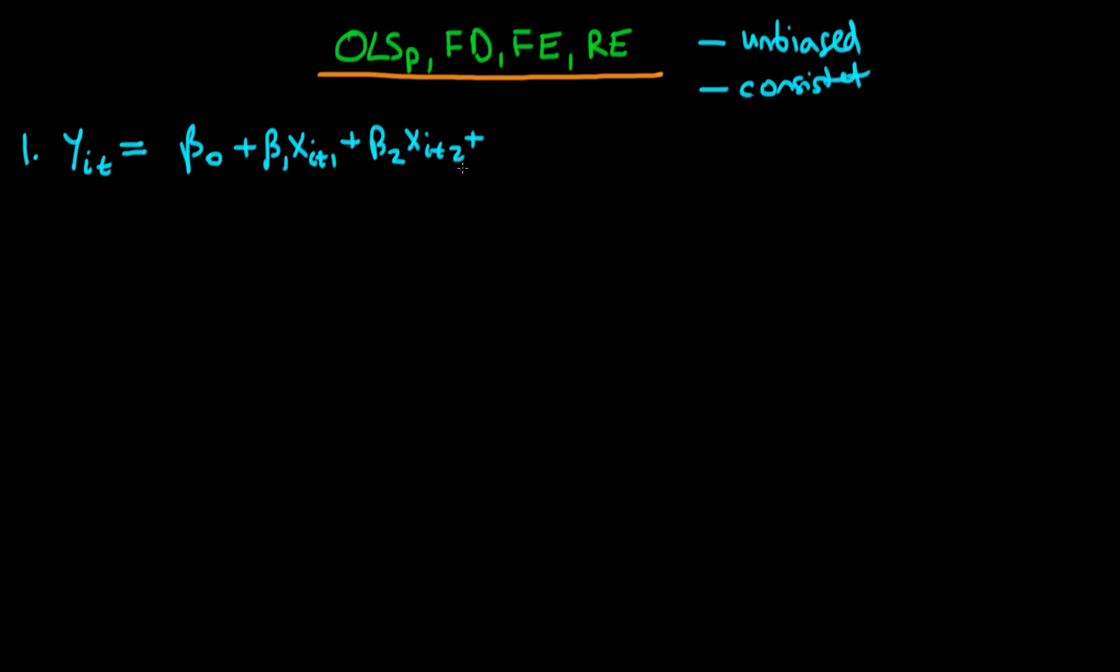Then we have beta_2 times X_it2, the 2 here indicating that we're talking about the second explanatory variable in our model and then we continue all the way up until we have our last explanatory variable which I'm going to call the pth explanatory variable. And then finally we have our unobserved effect alpha_i as well as this idiosyncratic error u_it.